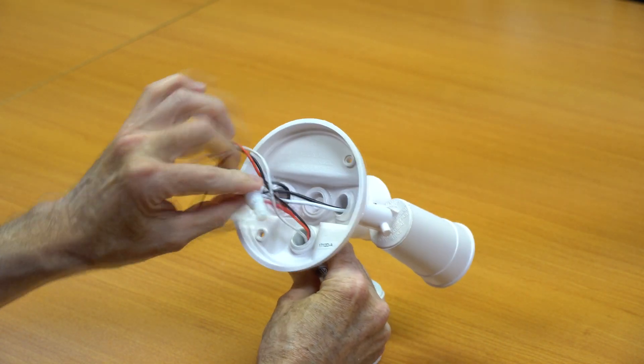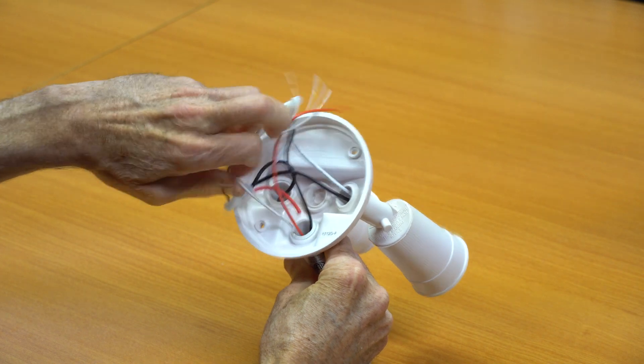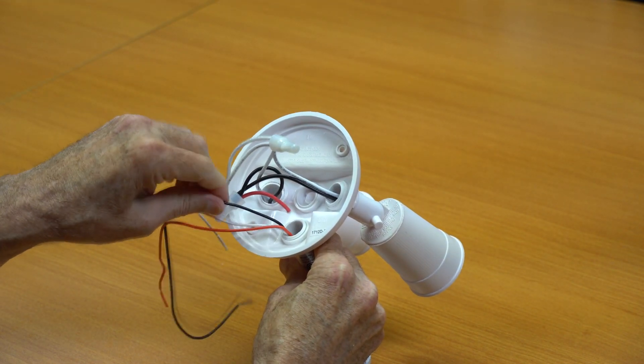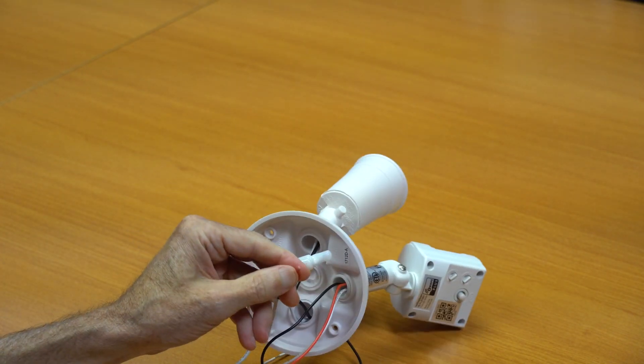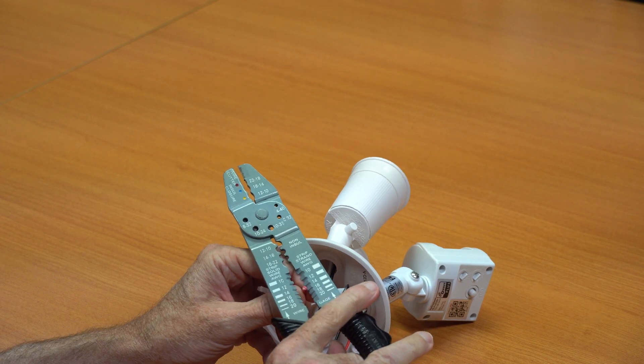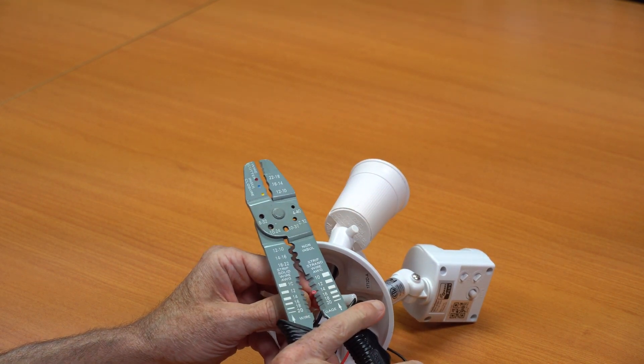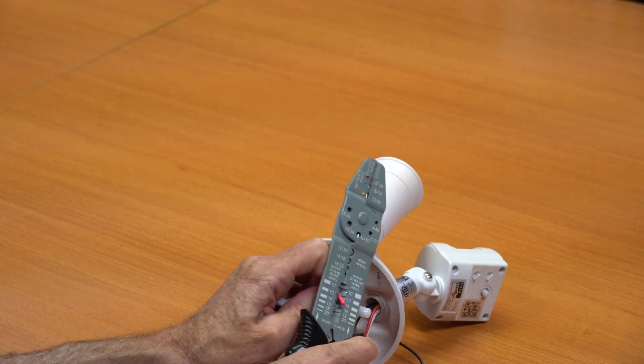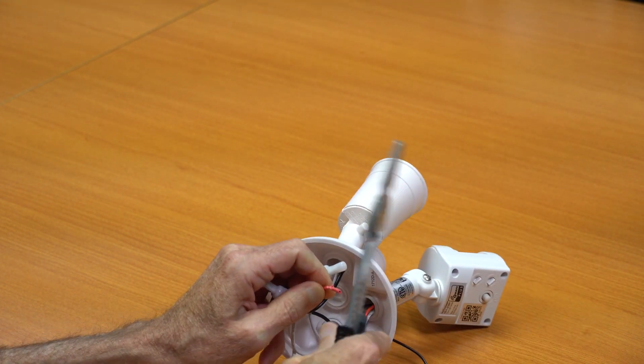The last step is to connect the wires together. The white wires need to be connected together. For this step, I'm going to use my wire strippers and crimpers. I'm going to take about three quarters of an inch of insulation off of each wire. Once the wires are stripped, they're going to be twisted together.